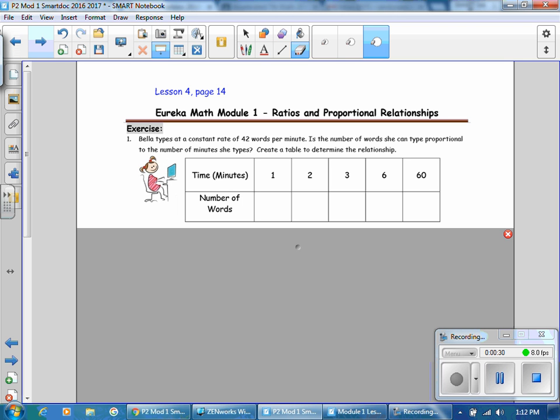In Exercise 1, Bella types at a constant rate of 42 words per minute. Is the number of words she can type proportional to the number of minutes she types? Create a table to determine the relationship. So we're wanting to know if she types at the same rate. Does she get faster, does she get slower, or does she type at a constant rate?